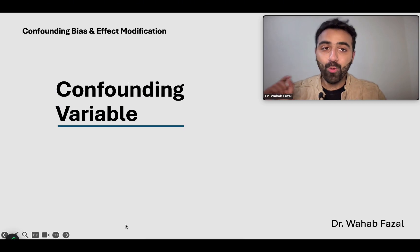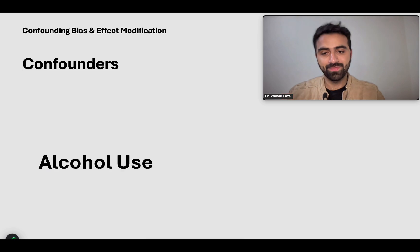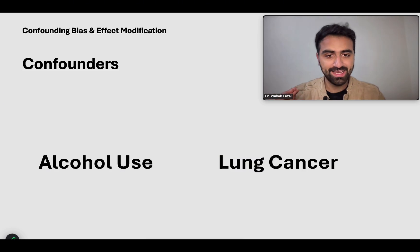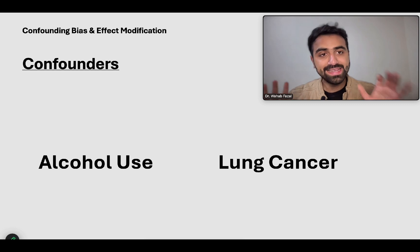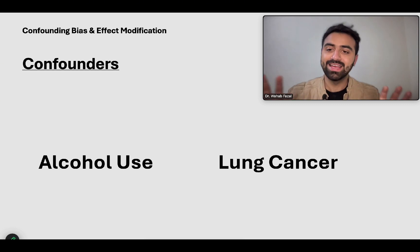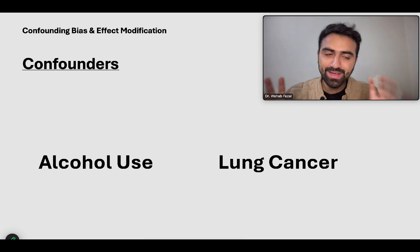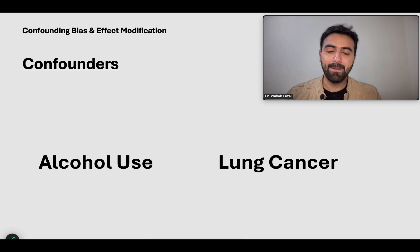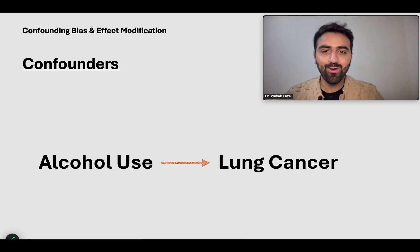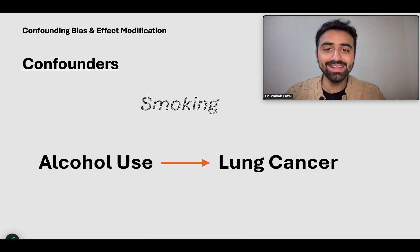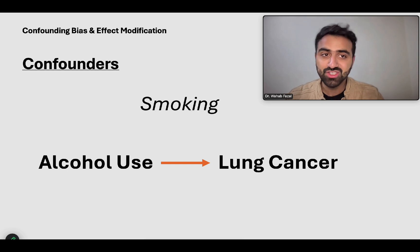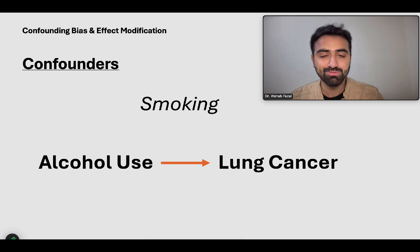So what is a confounding variable? We'll understand that with the help of an example. Let's say there's a researcher who is convinced that alcohol use leads to lung cancer. But the problem is that the majority of alcohol users also use something else on the side — and that's smoking. A lot of alcohol users also smoke.